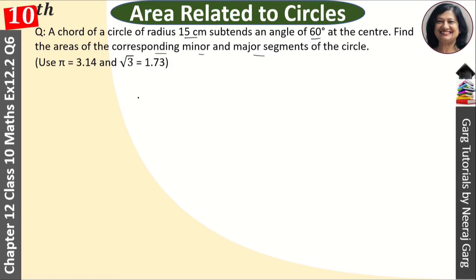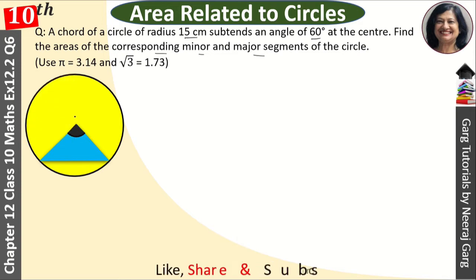First of all, we have made a circle. This is center O and its chord is AB. The radius is 15 centimeters and the angle is 60 degrees. Find the area of corresponding minor and major segment. Minor segment is this.